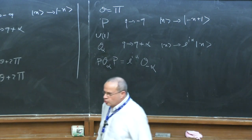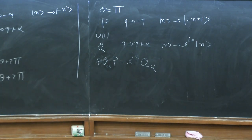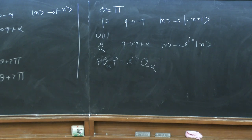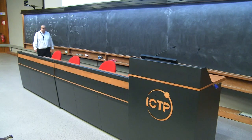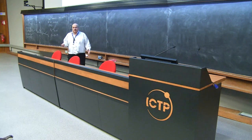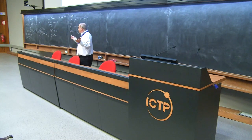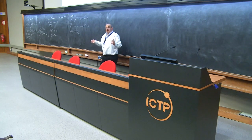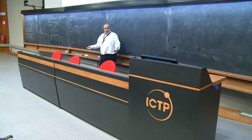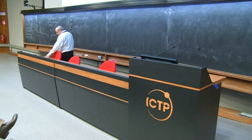This was known already to Wigner. He said that if a classical system has a symmetry group — in this case O(2) — the Hilbert space might not be in representations of that symmetry group. It might be in a representation of a central extension of the symmetry group. This is quantum mechanics 101, and we see it here.